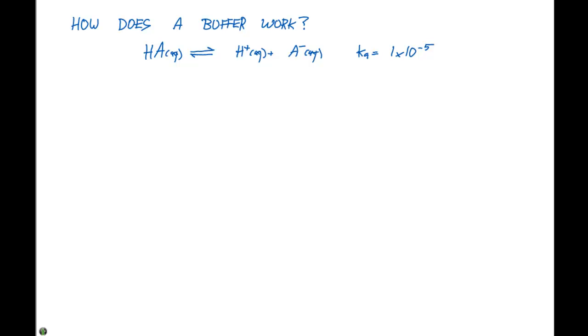which is in equilibrium with H⁺ plus A⁻. A Ka of 1 times 10 to the minus 5 means we have a small K value, which means that the equilibrium is gonna favor reactants.